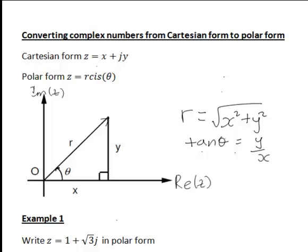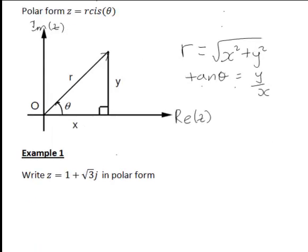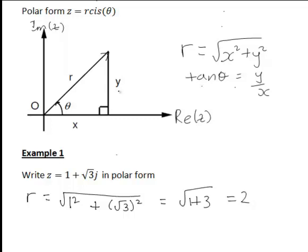So for the first example, let's look at writing z equals 1 plus the square root of 3 j in polar form. So first we could start by finding magnitude r. In this case the real part x is 1, the imaginary part is the square root of 3, so the magnitude will just be the square root of 1 squared plus square root of 3 squared, which is just the square root of 1 plus 3, that just gives the square root of 4 is 2. So the magnitude of this complex number r is 2.